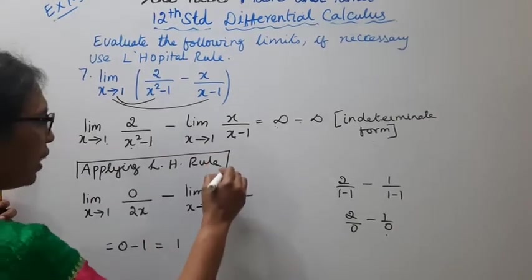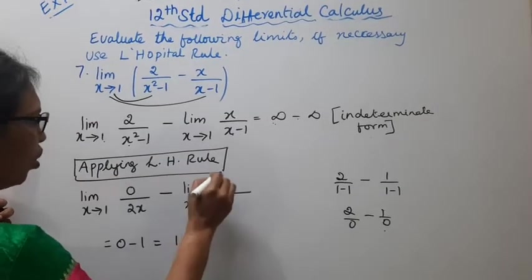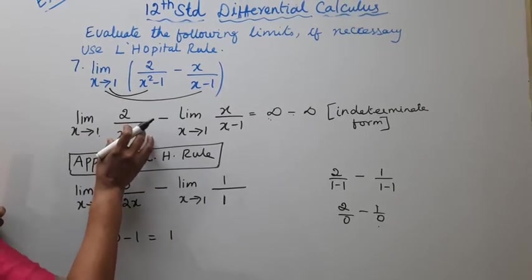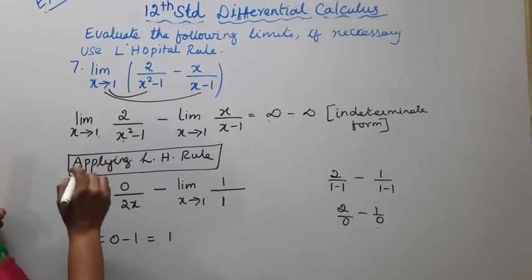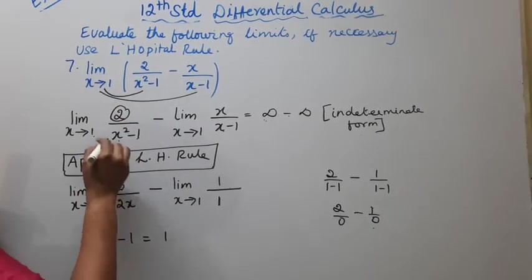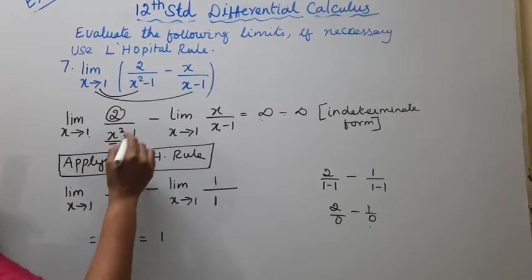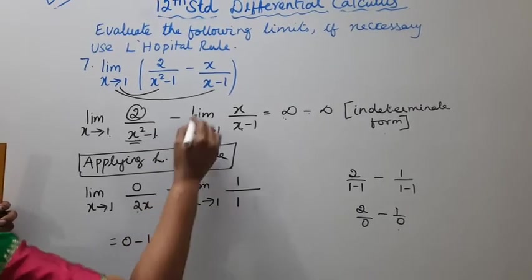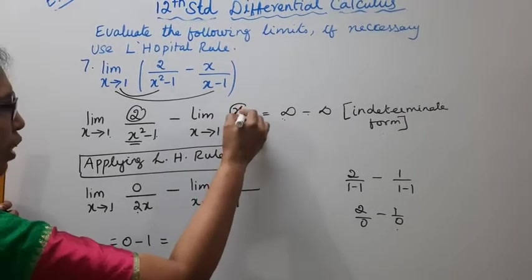We will apply L'Hôpital rule. L'Hôpital rule differentiates the numerator and denominator. Limit x tends to 1, 2 differentiate is 0, x square differentiate is 2x, minus 1 differentiate is 0.